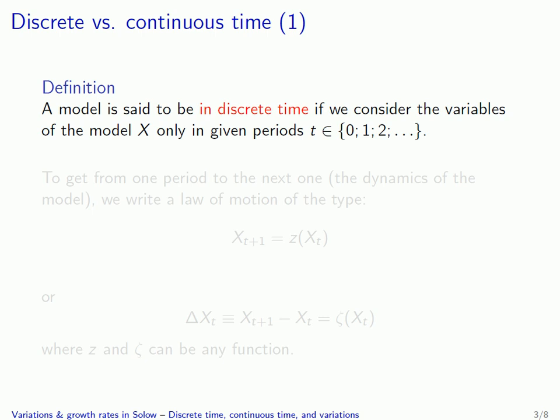First, we need to define what a discrete time model is. An economic model is in discrete time if we only consider and represent the relevant variables in the model in some given fixed periods t, which will be equal to 0, 1, 2, and so on. The analogy here is of a clock that is ticking at several time intervals, and we only consider what happens during the ticks and not between two ticks of the clock.